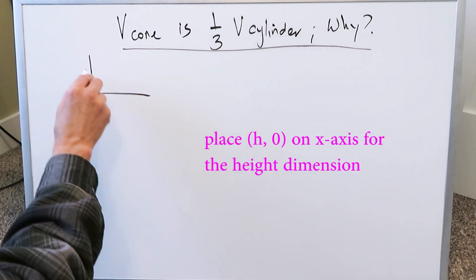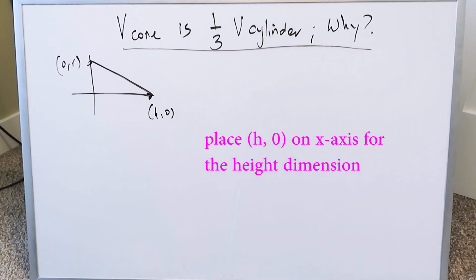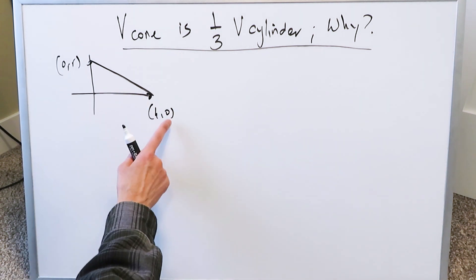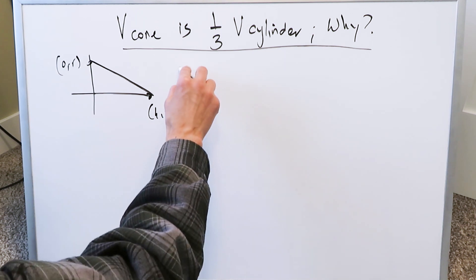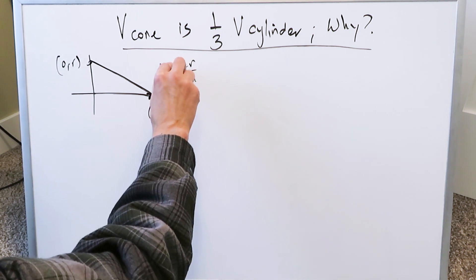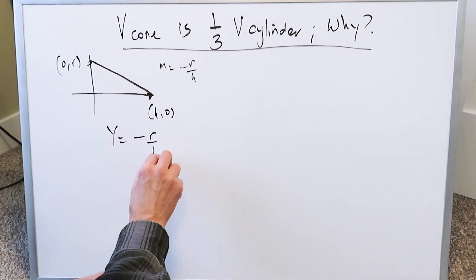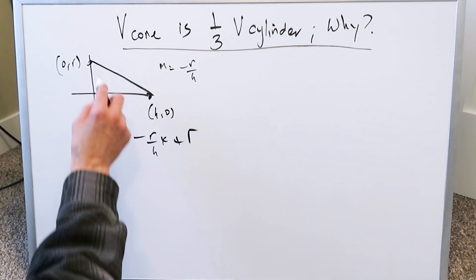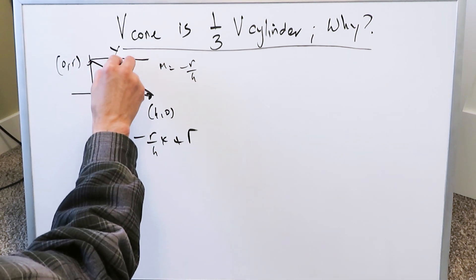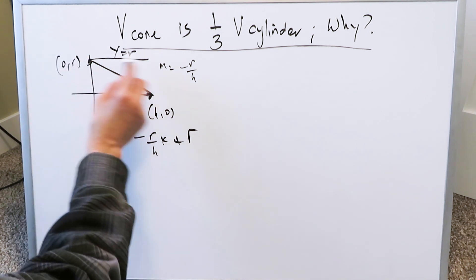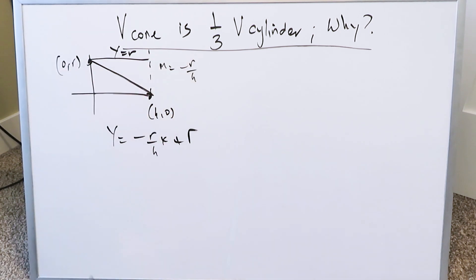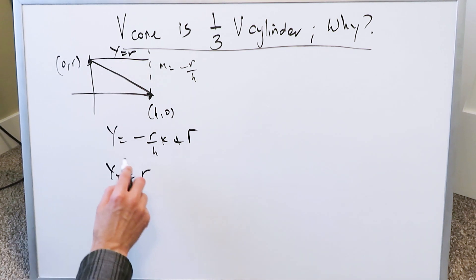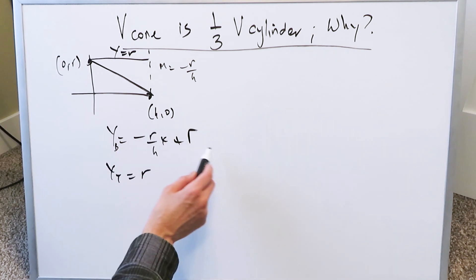Starting with the x-y plane, you have a point (0, r). Connect these two and make a diagonal line. The slope calculation gives y₂ − y₁ over x₂ − x₁, which equals −r/h. The equation of this diagonal line is y = (−r/h)x + r. Then draw a horizontal line across at y = r, since it passes through (0, r). So you have a top boundary line y_t = r and a lower boundary line which is the diagonal line.